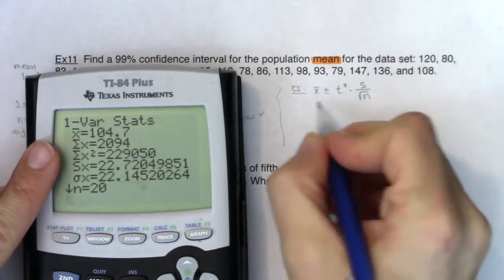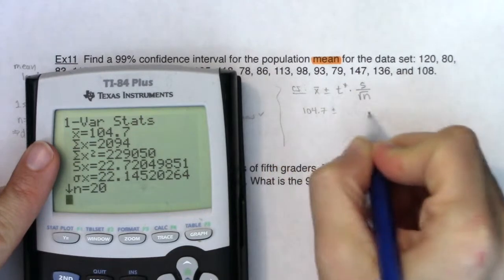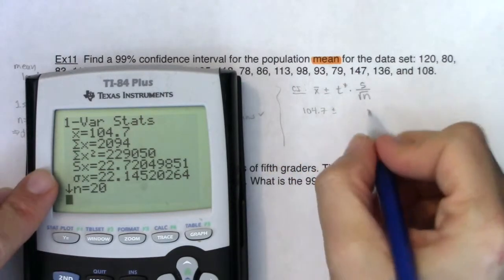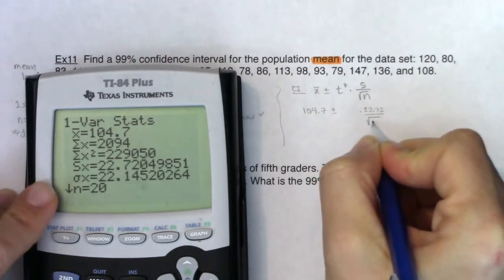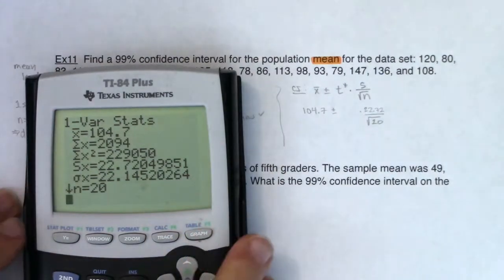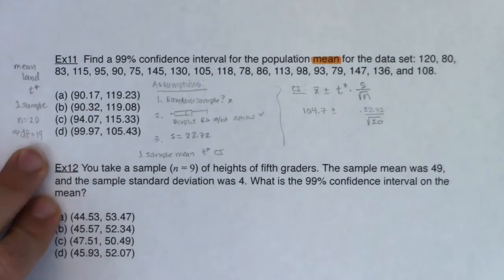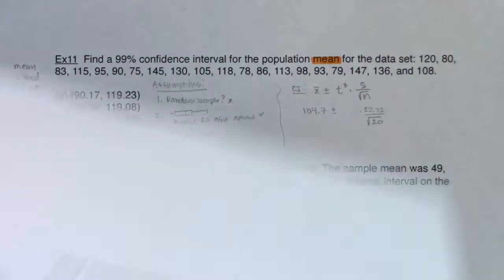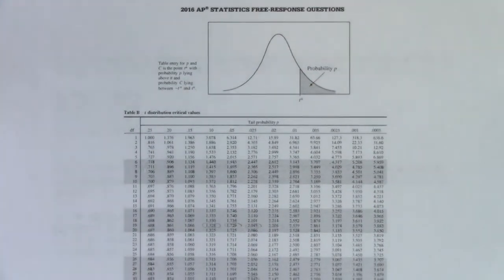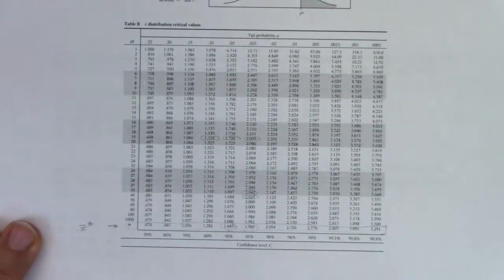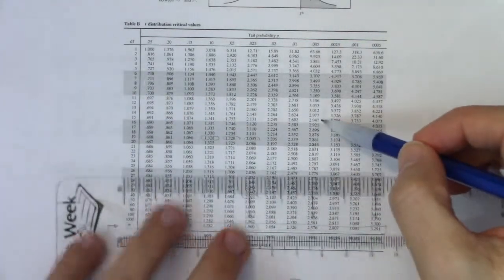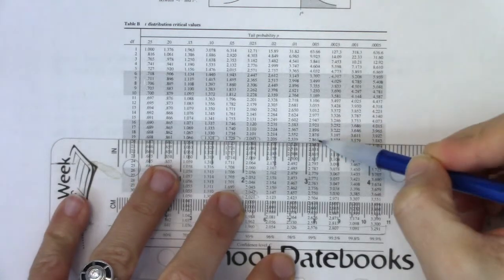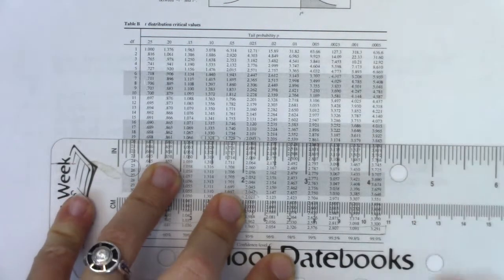So let's use this calculator output. It looks like my mean was 104.7. I'm going to go plus or minus — I'll save some space for t*. But s was 22.72 over the square root of n, which was 20. Let's go figure out what that t* critical value was. If I've got 19 degrees of freedom and I'm going at 99% confidence — 19 degrees of freedom against 99% confidence. It looks like my t* critical value is 2.861.